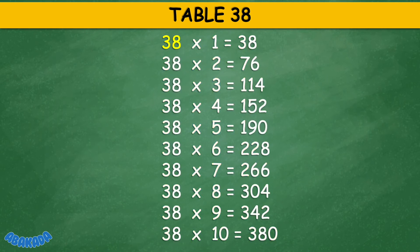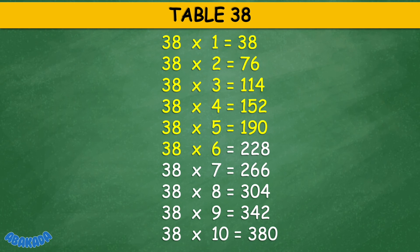Table 38: 38 times 1 equals 38, 38 times 2 equals 76, 38 times 3 equals 114, 38 times 4 equals 152, 38 times 5 equals 190, 38 times 6 equals 228, 38 times 8 equals 304, 38 times 9 equals 342, 38 times 10 equals 380.